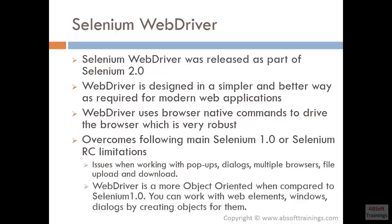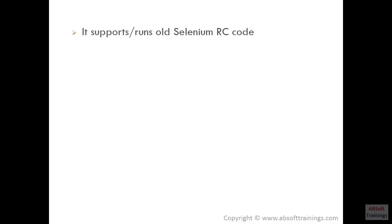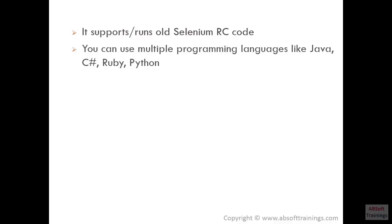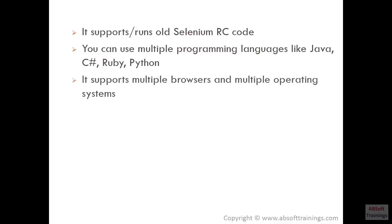WebDriver is more object-oriented when compared to Selenium 1.0. You can work with web elements, windows, and dialogs by creating objects for them. It supports running old Selenium RC code so that you can still use it instead of rewriting everything using Selenium WebDriver. You can use multiple programming languages like Java, C#, Ruby, and Python with WebDriver. It can run tests on multiple browsers like IE, Google Chrome, Firefox, Opera, and Safari, and also works on multiple operating systems like Windows, Mac OS, Unix, Linux, and Solaris.